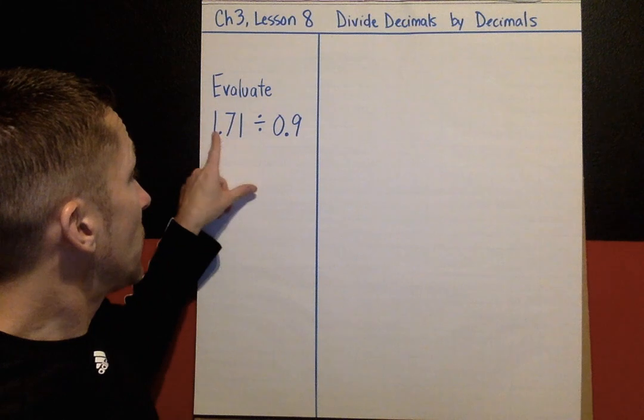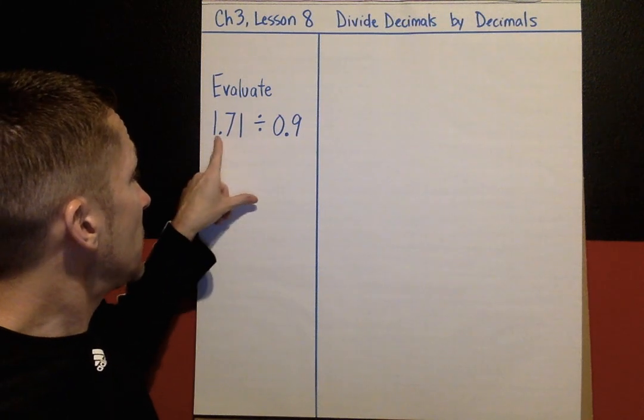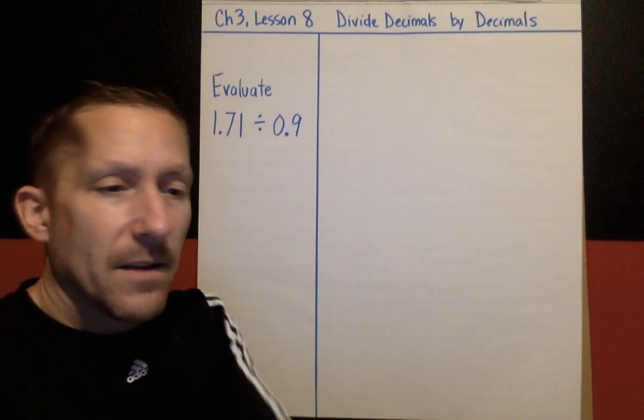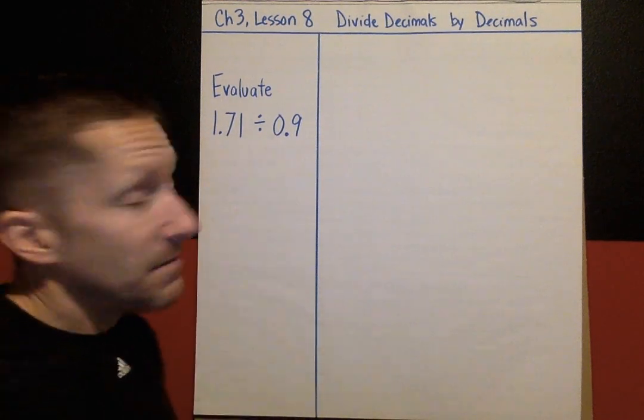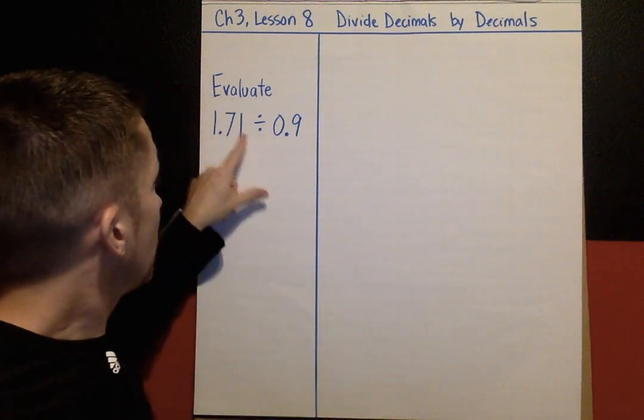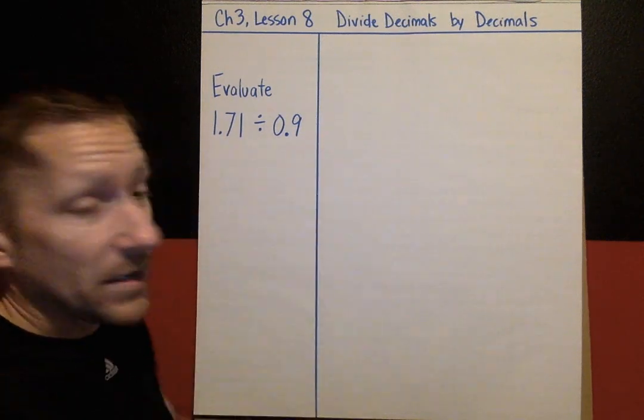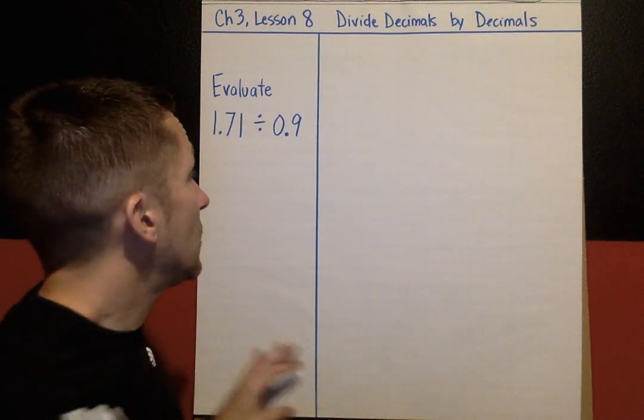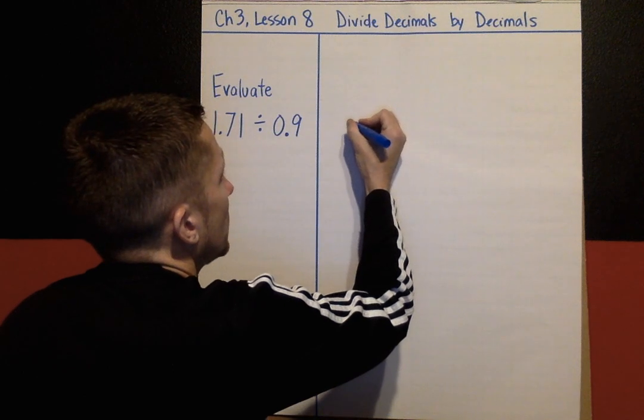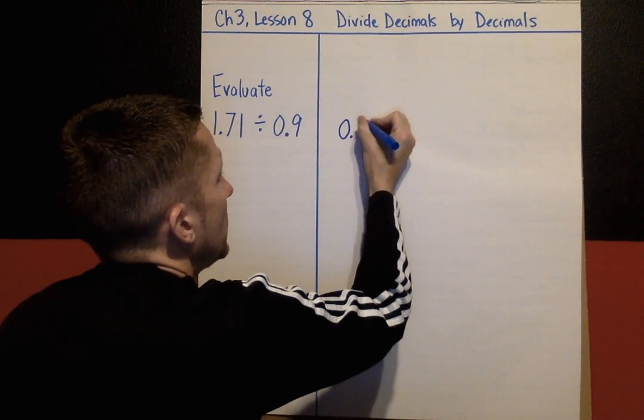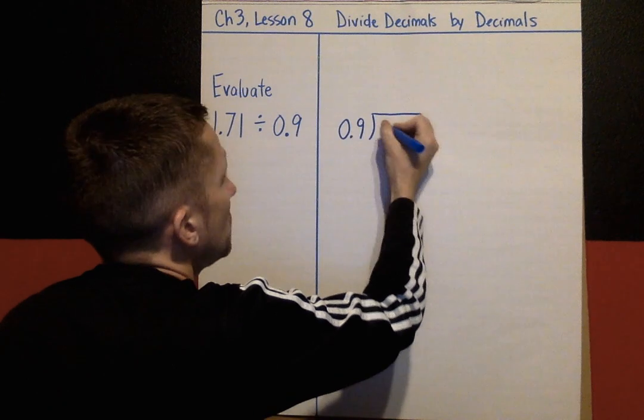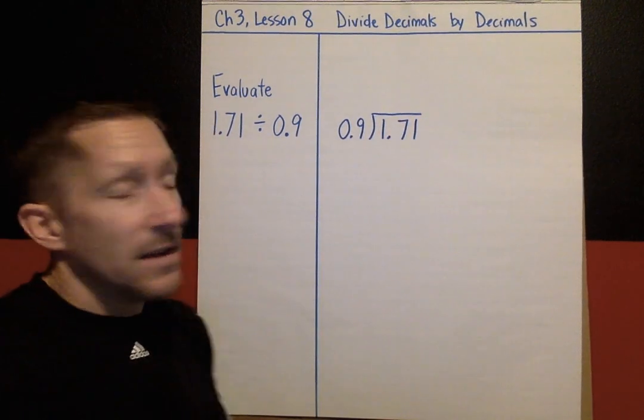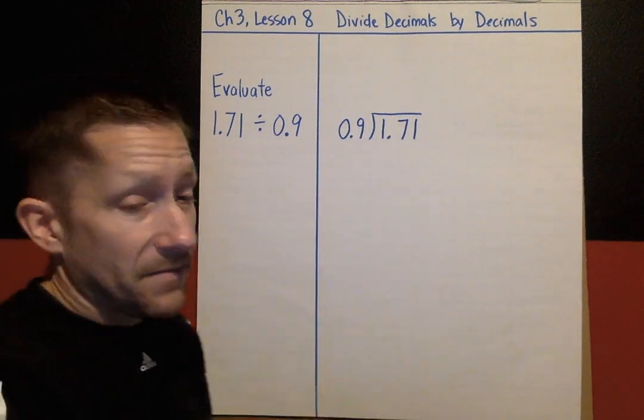The first problem we're going to solve or evaluate is 1.71 divided by 0.9. I'm going to rewrite this to do long division. So I know that we've talked about this before - the first number always is going to go on the inside. This number is the divisor, and that's going to go on the outside. So it's going to look like this: 0.9 how many times does that go into 1.71. So we're set up to long divide.